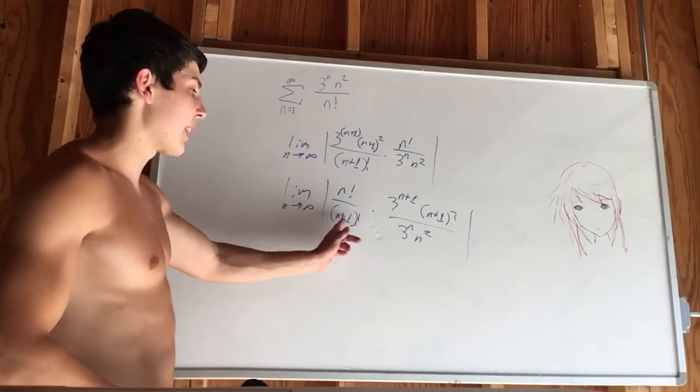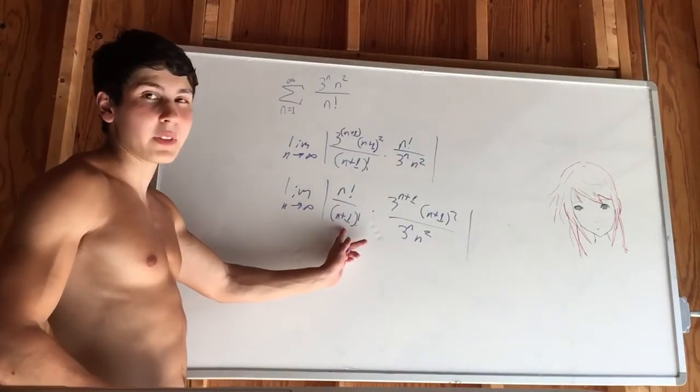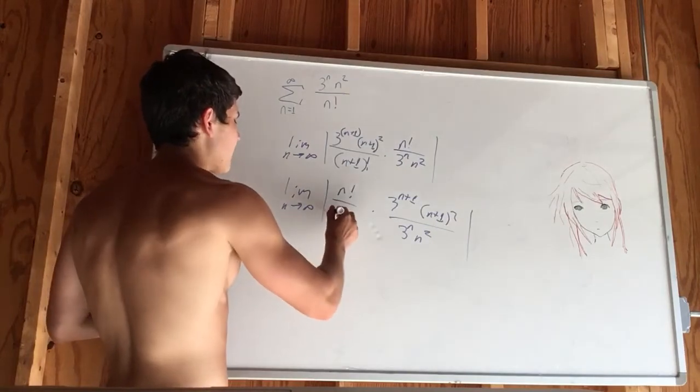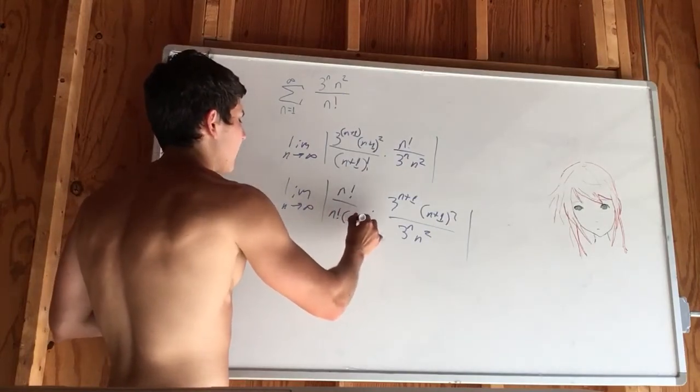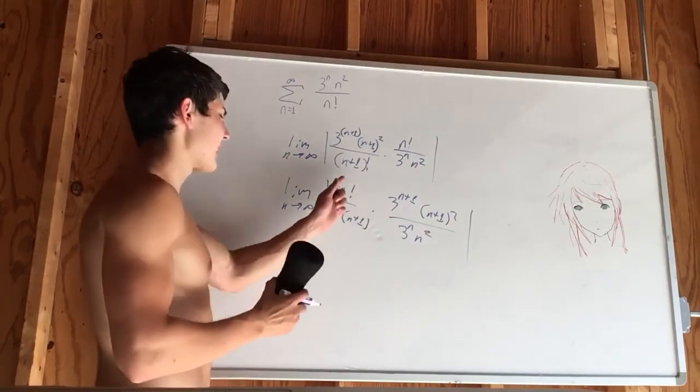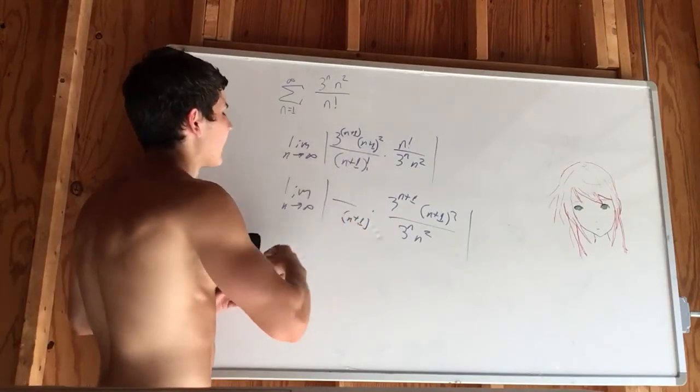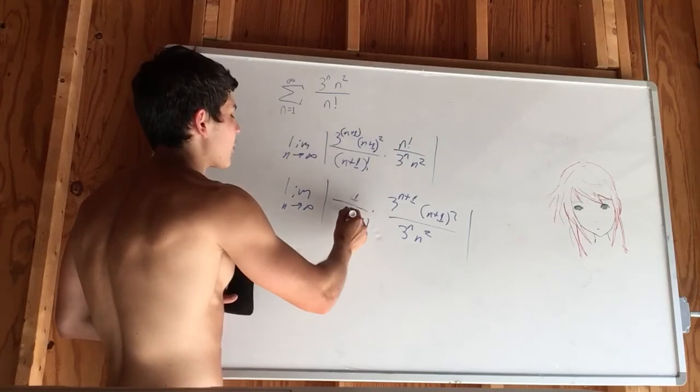Now we can start to cancel stuff out because this right here is n factorial times n plus 1. That's n factorial times n plus 1, which means that the n factorials cancel out. We're left with 1 over n plus 1.